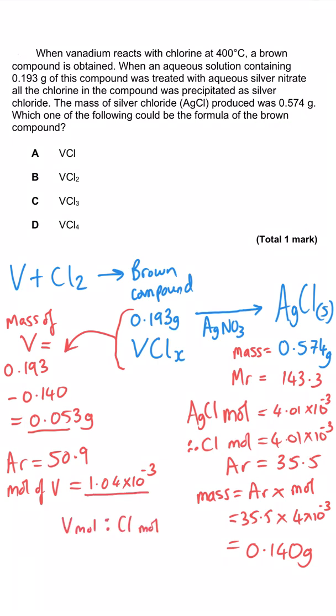And last of all, we need to turn that into a ratio. We can tell probably by inspection here what the ratio is going to be, but the strategy is to always divide those mole numbers by the smallest value, which of course is the vanadium. Anything divided by itself is 1, and when we divide our 4 times 10 to the minus 3 by 1 times 10 to the minus 3, we of course get 4, which means there is 4 moles of chlorine for every 1 mole of vanadium. And that means of course that our correct answer here is D, VCl4. So one mark here, but could easily be 2, 3, 4 marks in a longer mark question.